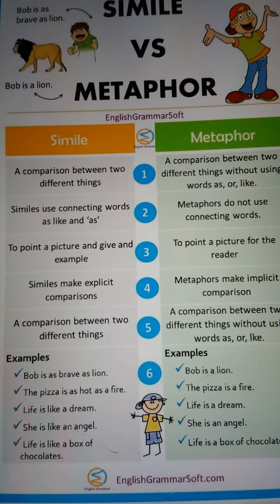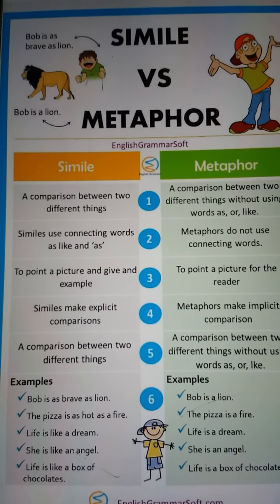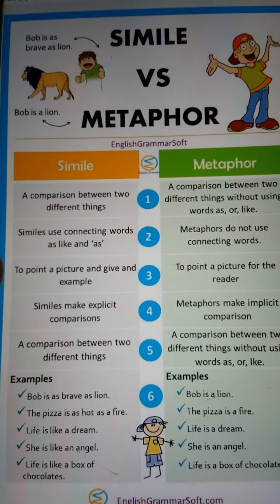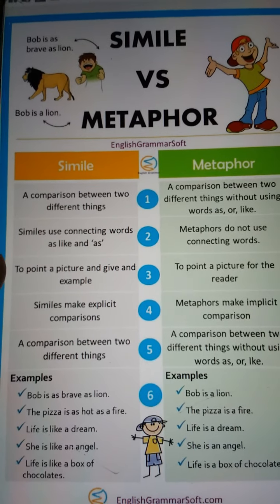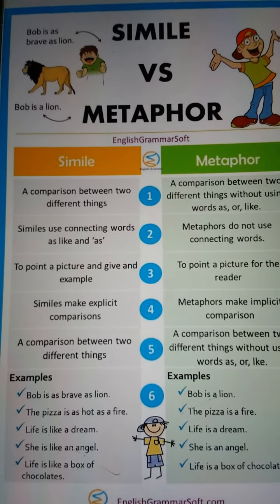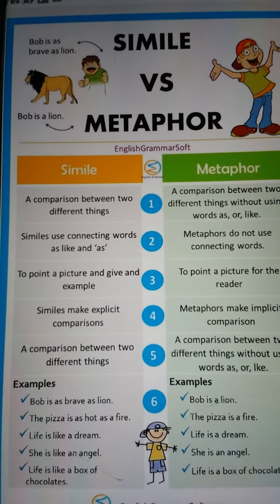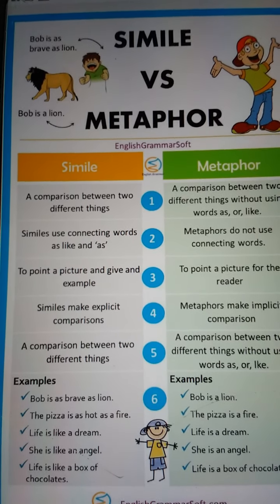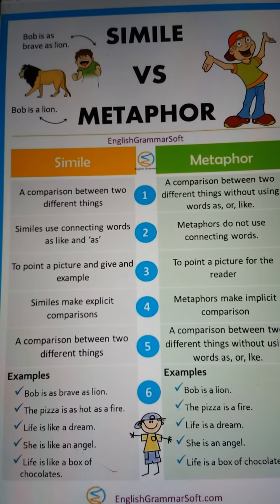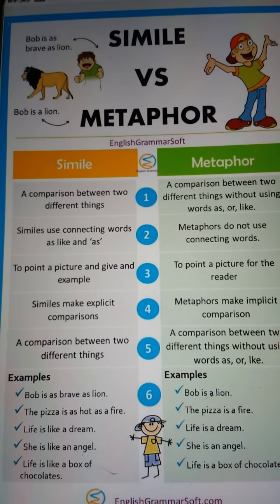These are two of the most important poetic devices. Simile is an indirect comparison and metaphor is a direct comparison. For example, 'Bob is as brave as a lion' — here we can see that Bob is not literally a lion.